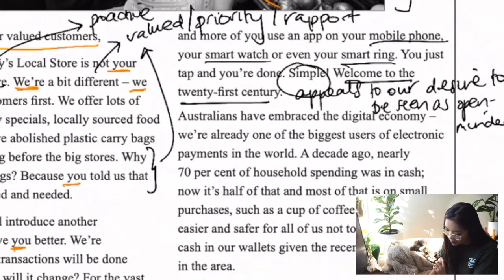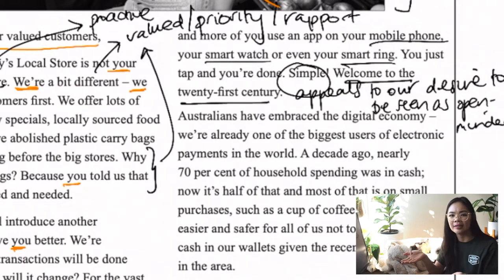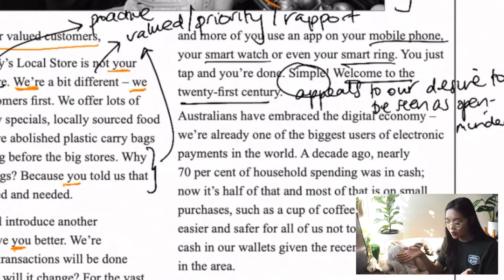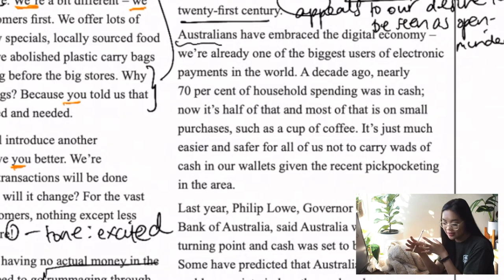She also highlights mobile phones, smartwatches, smart rings — many things a lot of people have. It just compounds that idea that this is a no-brainer. Why shouldn't you move to cashless payments if you're already immersed in this tech world? Then she moves into talking about the wider economic context of Australia in the next paragraph. That sense of time — comparing the now, the 21st century, with a decade ago — you can see that link very clearly.